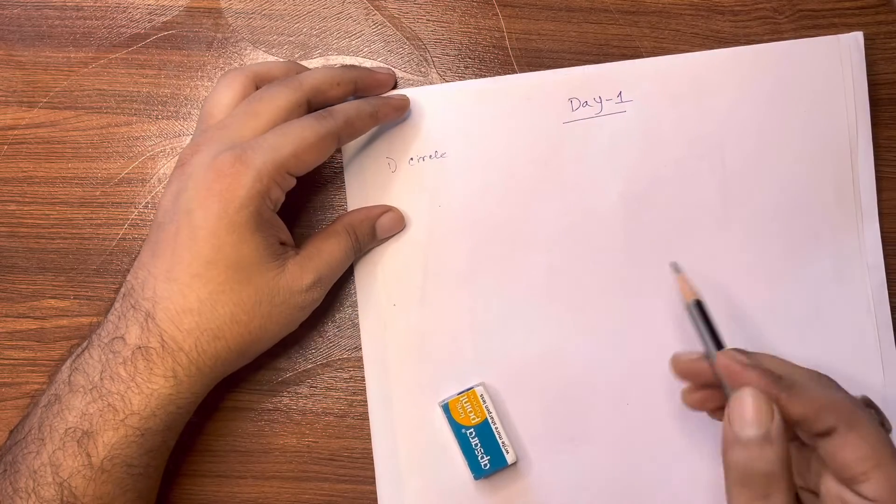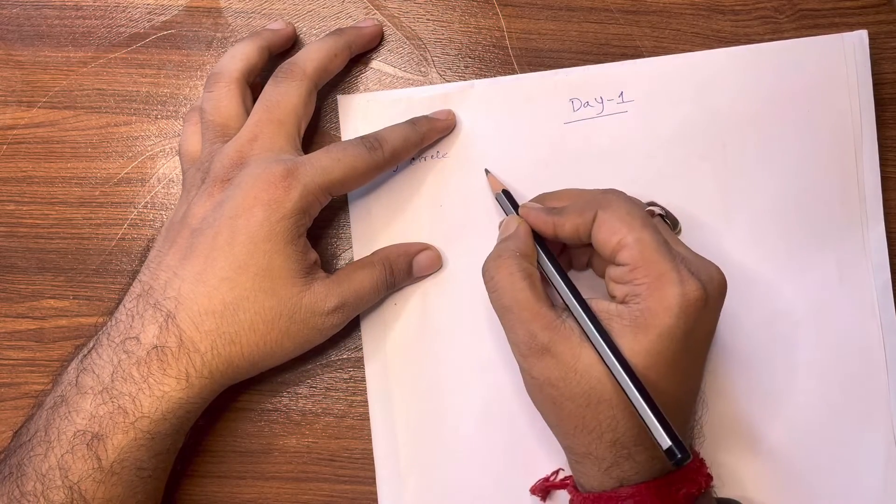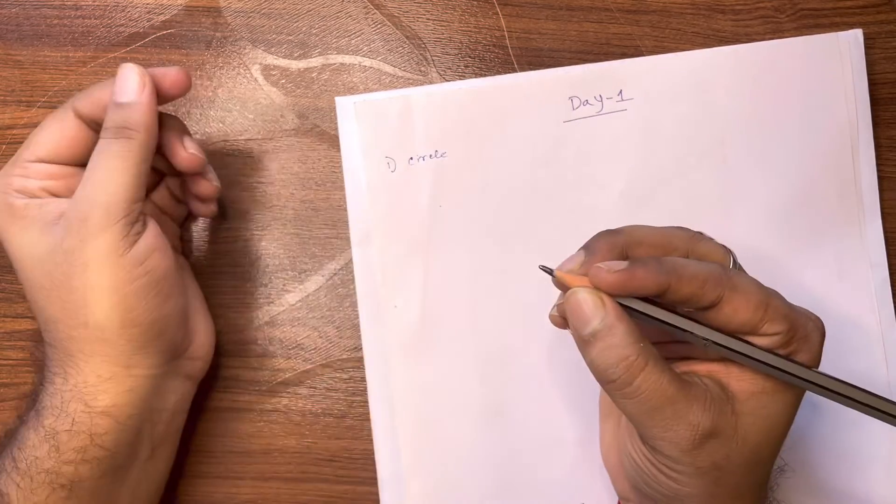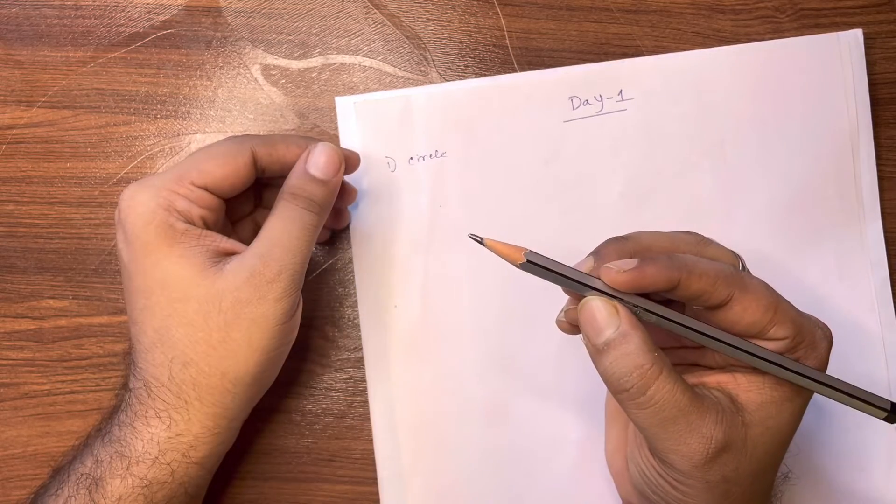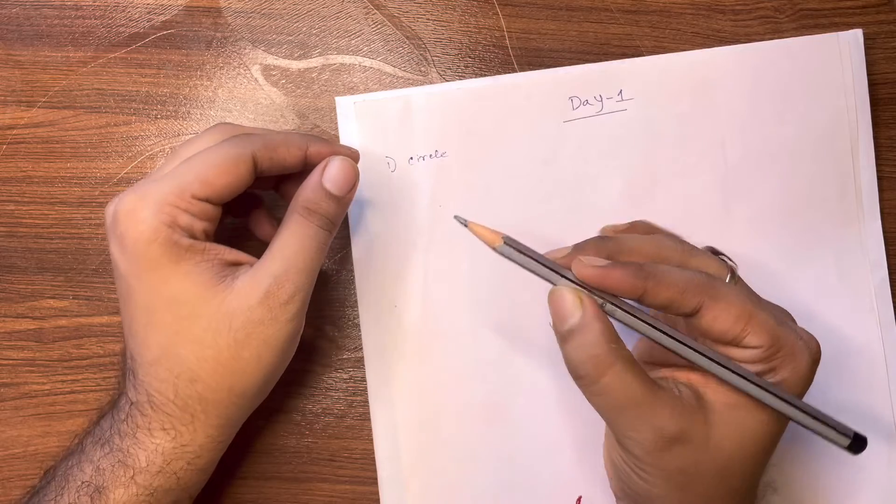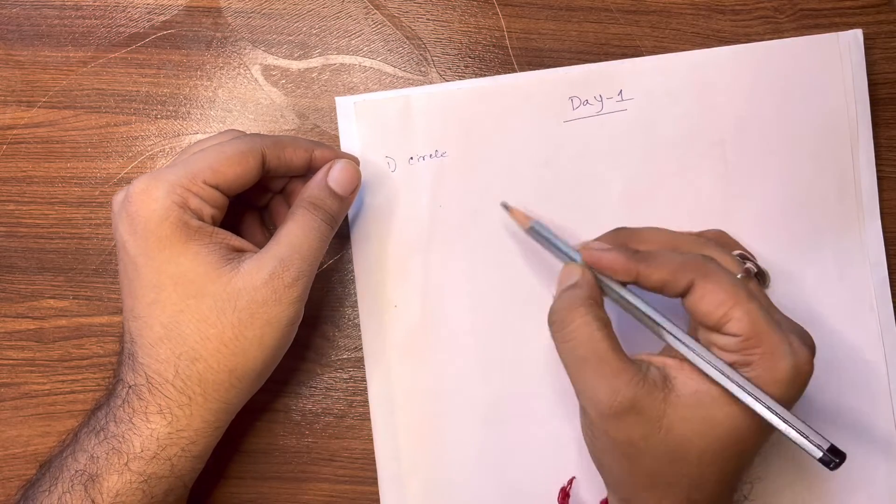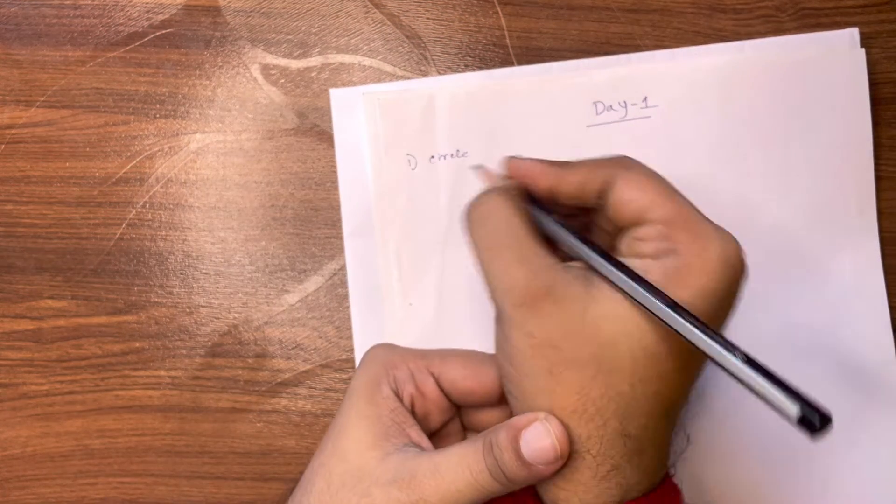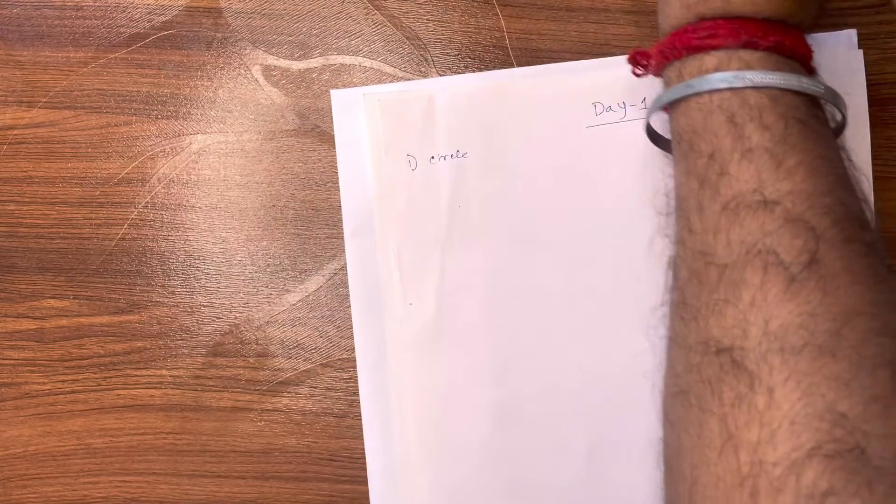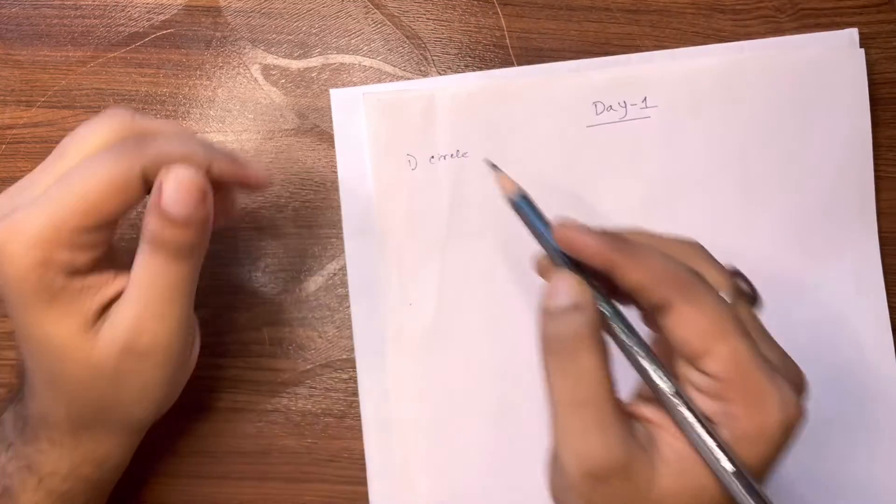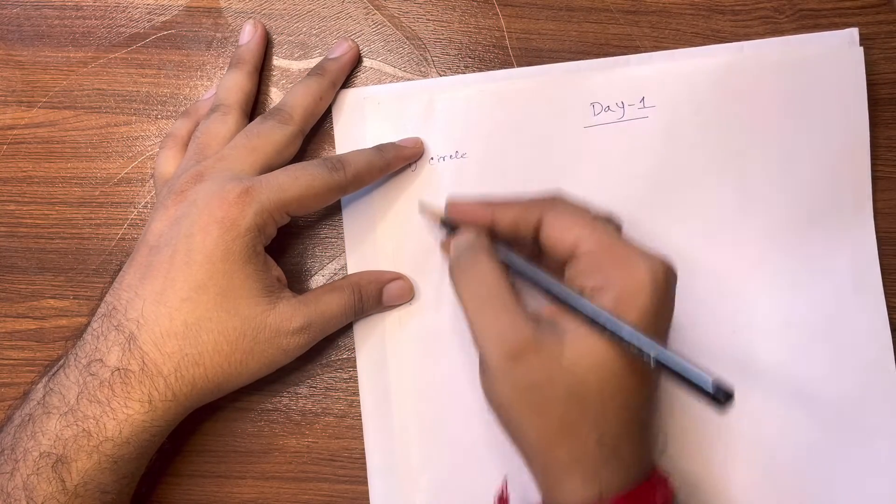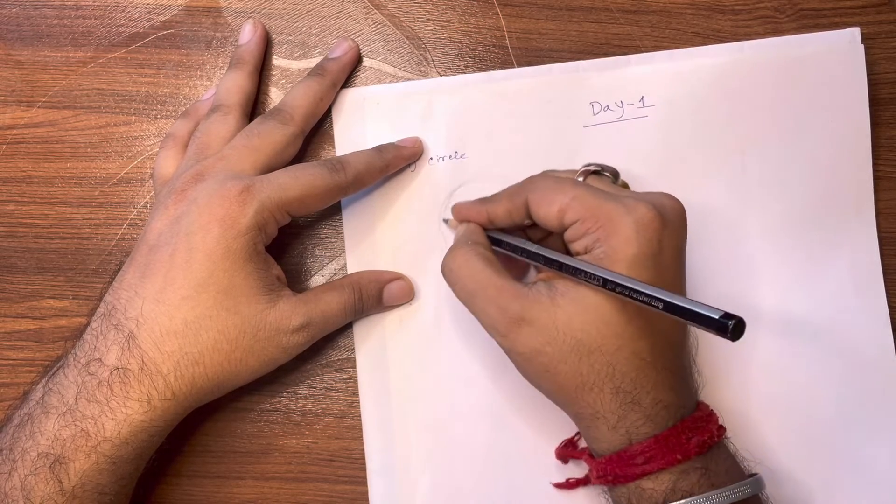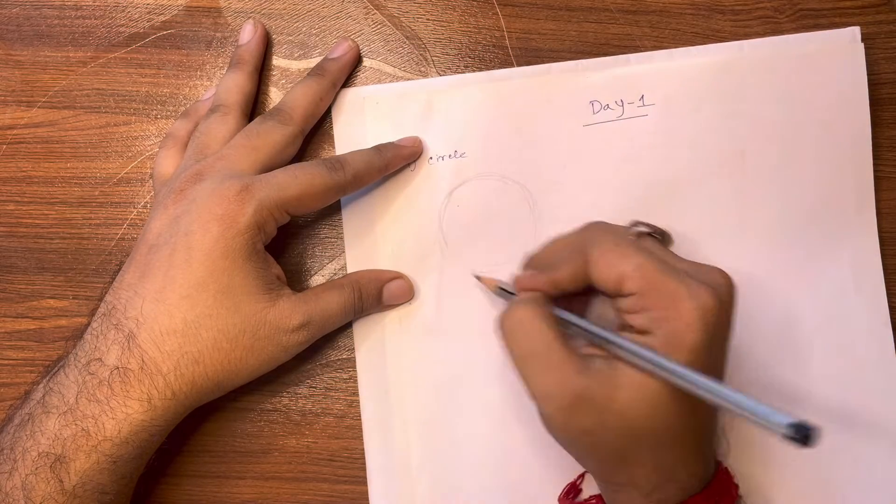When we are doing a circle, we will learn how to use the pencil. The pencil should be held very softly. The grip should be soft. Then we draw a circle on the other side.